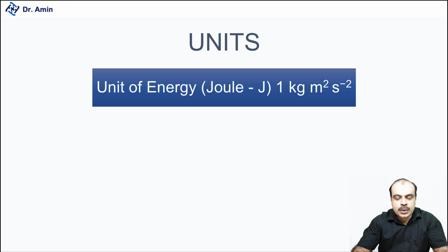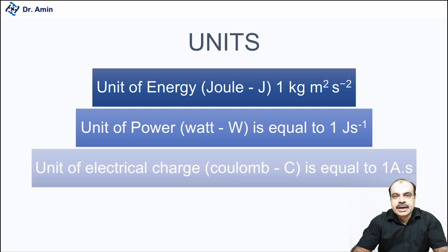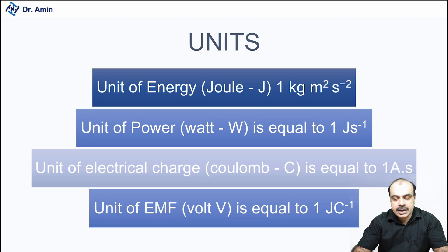For energy, we use the joule. Joule is one kilogram meter squared per second squared. So you can see we are using kilogram, meters, and seconds, which we just discussed. Then we have the unit of power, which is watt, equal to one joule per second. And then we have the unit of electrical charge, the coulomb, which is one ampere per second. And then we have the unit of electromotive force, which is equal to one joule per coulomb. And this is volt, which is the driving force of current through any circuit.